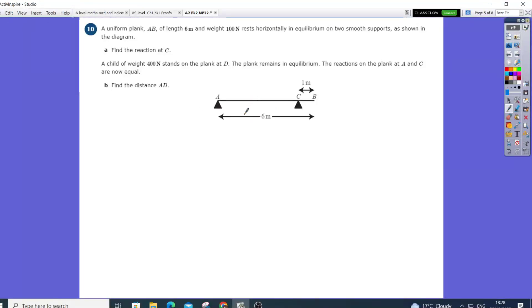Okay, let's have a look at this question. Plank AB, length 6 meters, weight 100 newtons, rests horizontally in two smooth supports. Find the reaction at C.